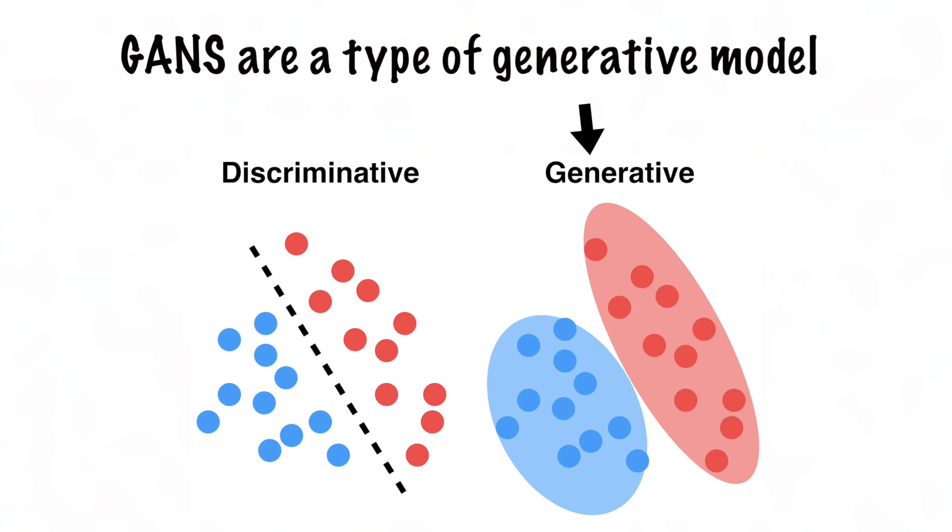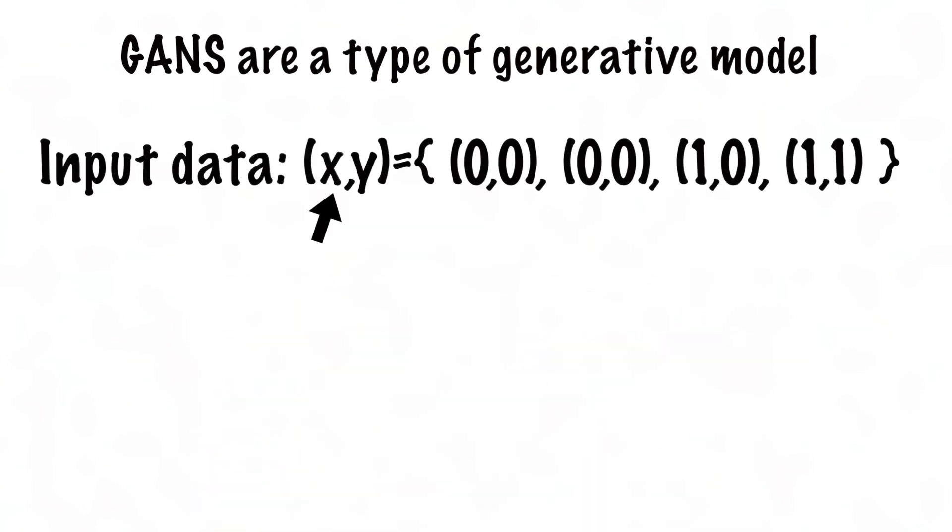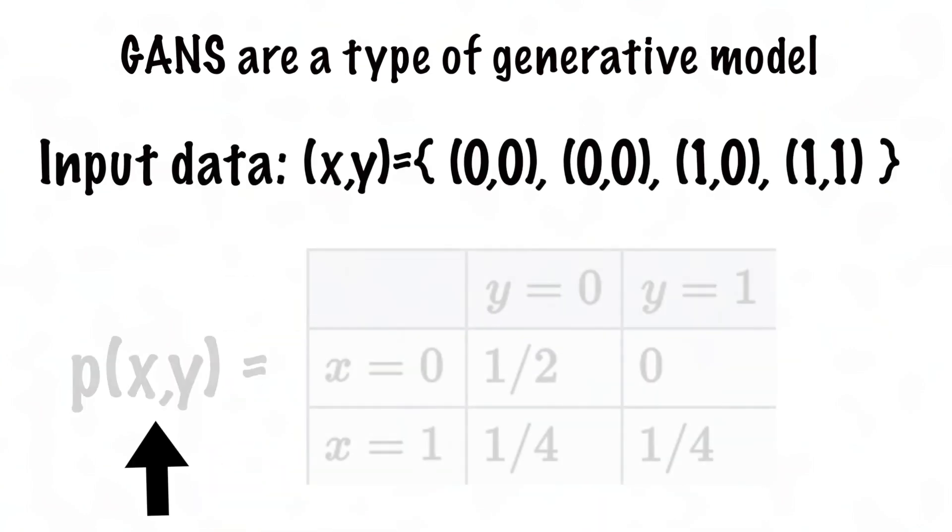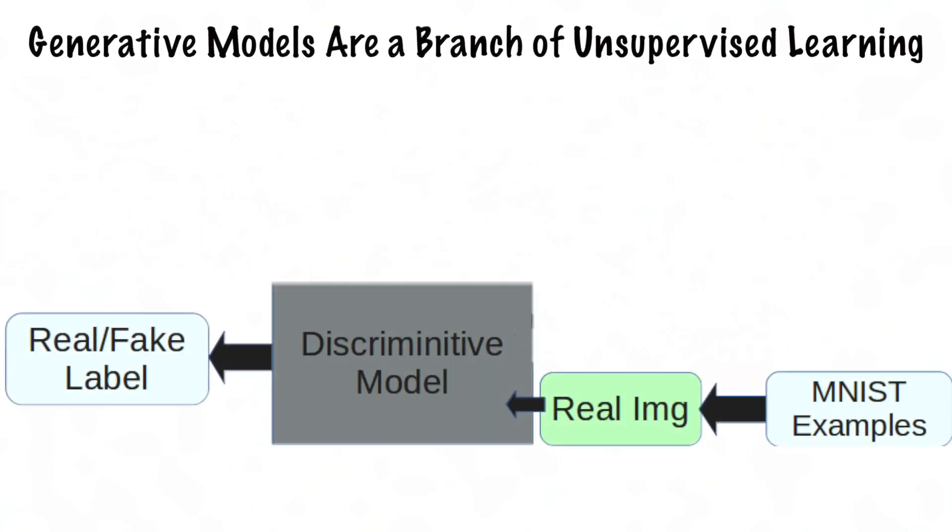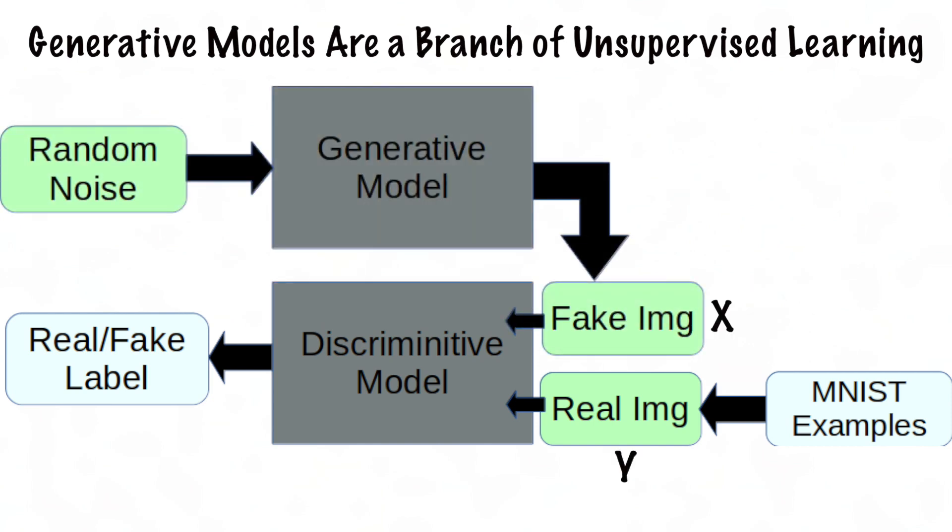GANs are a type of generative model. Given some input data x and some labels y, it learns the joint probability distribution of this data. With the joint probability distribution function, given a y, you can calculate or generate its respective x. And since this is unsupervised learning, we have no labels handed to us. We use the training data as y and the generated data as x.